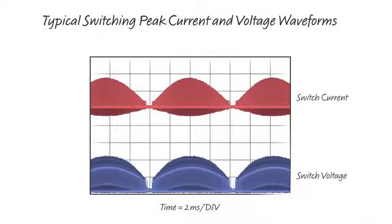This picture shows the peak switch current and voltage waveforms for a 25 watt flyback converter. Notice how the peak current follows in proportion to a 60 Hz input voltage line.